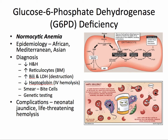The labs will reveal a decreased hemoglobin and hematocrit, an increased reticulocyte count, an elevated bilirubin and lactate dehydrogenase (LDH) which demonstrates destruction, as well as a decreased haptoglobin which demonstrates intravascular hemolysis. The smear will show bite cells — cells that look like they had a bite taken out of them. Complications include neonatal jaundice and life-threatening hemolysis.